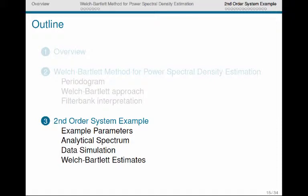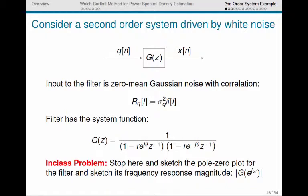So let's first see the system parameters. This second order discrete time linear time invariant system defined by the system function g of z is driven by white noise. The input to the filter is zero mean Gaussian noise with the correlation sigma q squared delta of l, meaning that it's uncorrelated from sample to sample.